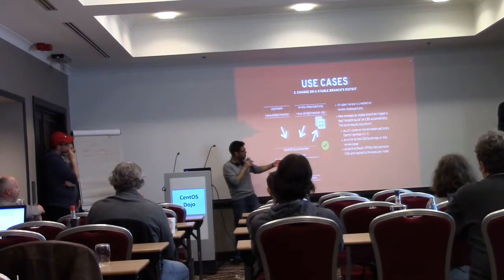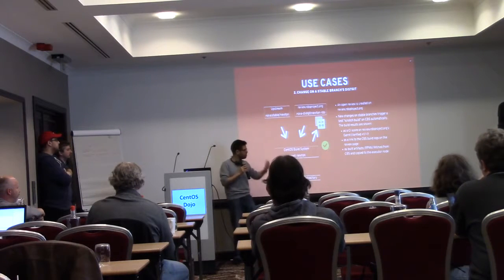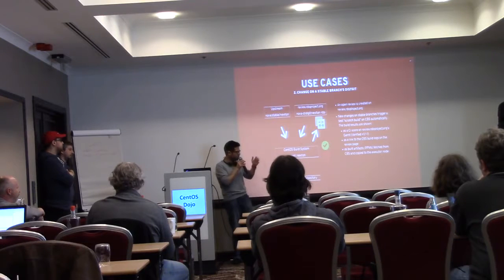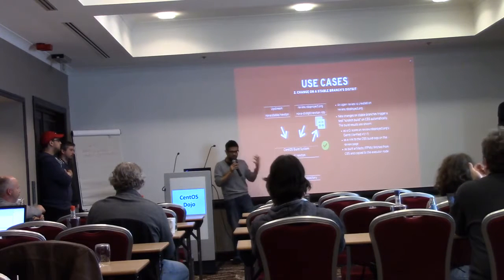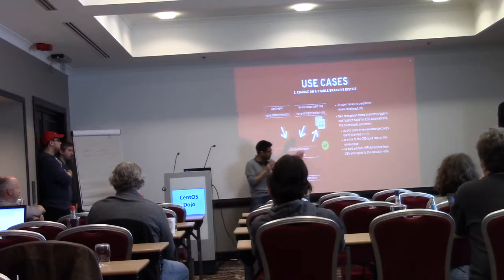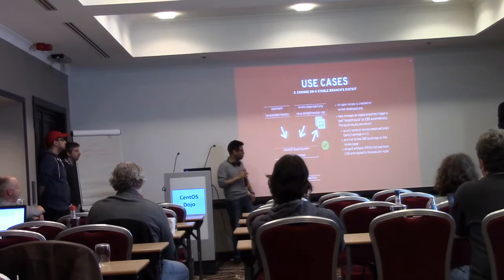CI will run and can score plus one or minus one. You have to have a plus one from CI to add a plus two and get your patch merged. The patches are merged automatically by Gerrit according to those votes. You have a link to the CBS build and logs on the review page, so you can also check the failure in detail.